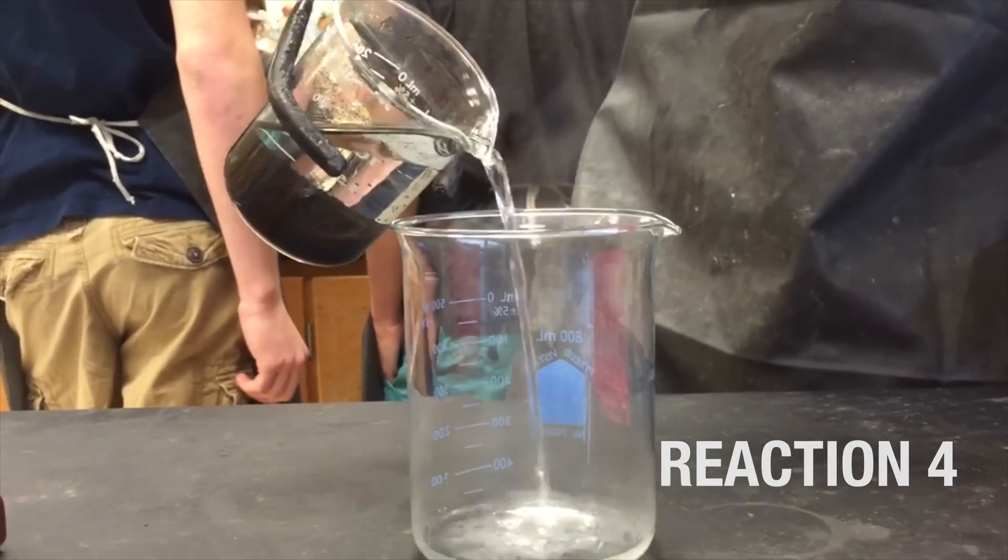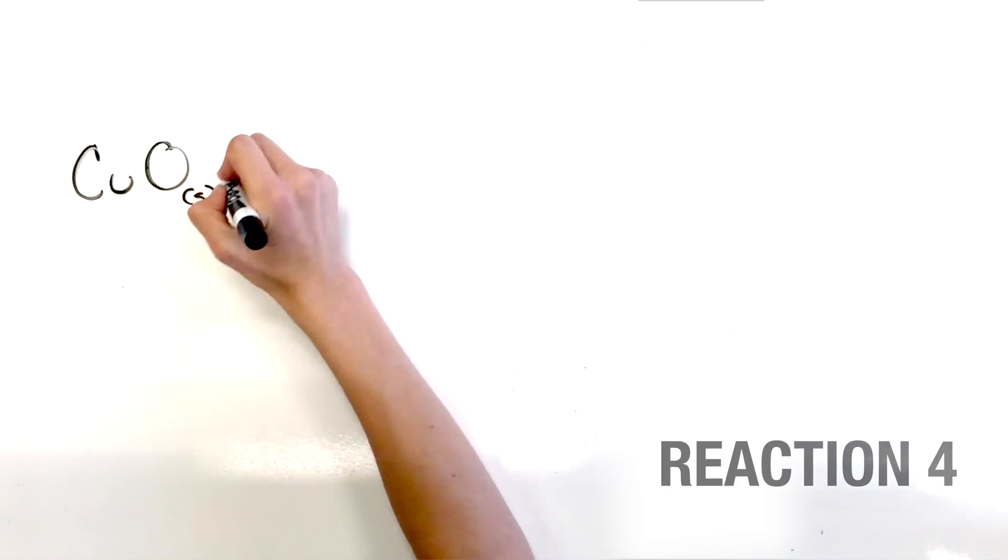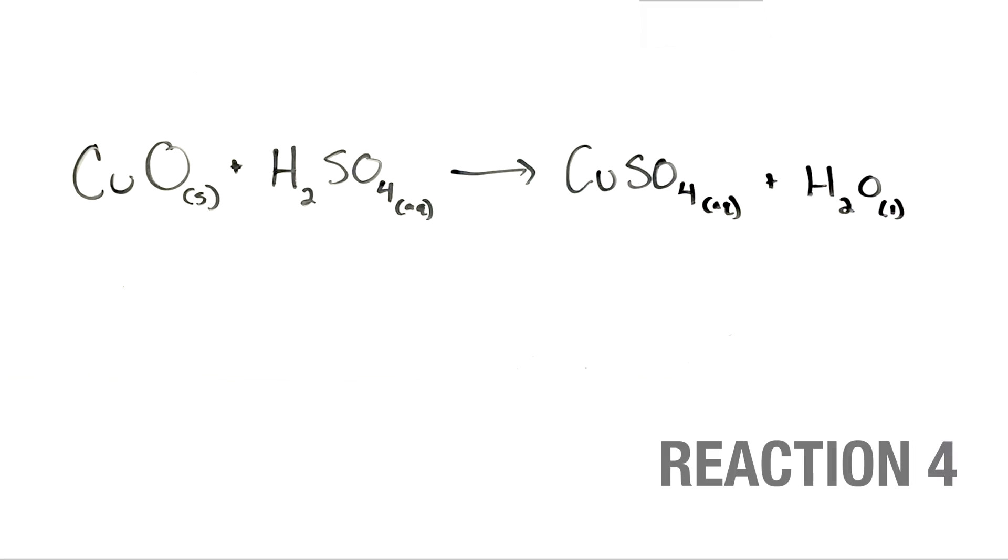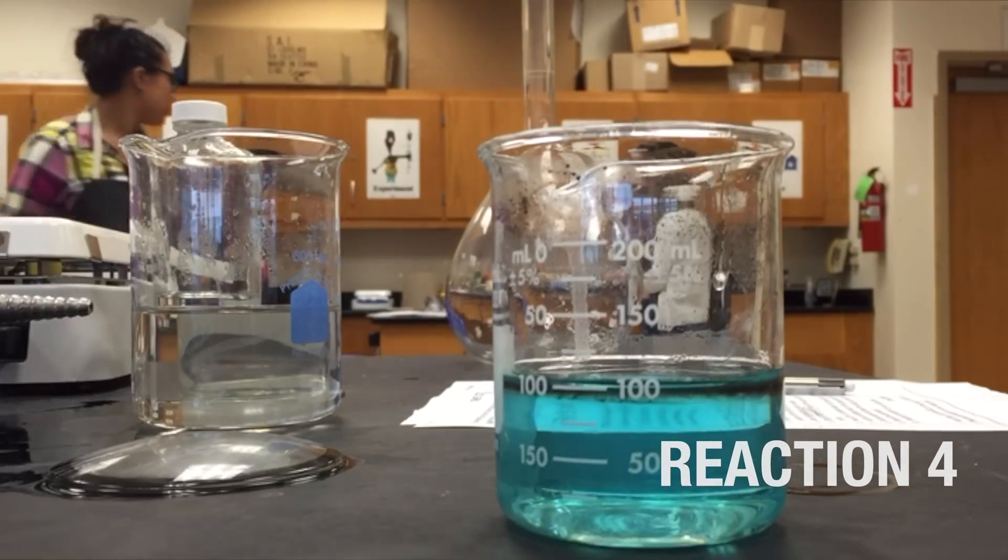Next, the water is separated from the copper(II) oxide precipitate. The copper(II) oxide is combined with sulfuric acid, forming copper(II) sulfate and water. In this reaction, the black solid is dissolved and the liquid turns blue.